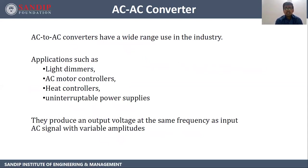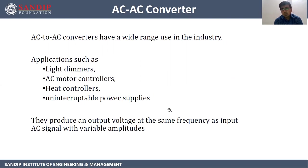Next topic is AC to AC converters. AC to AC converters have a wide range of use in industry. Applications of AC to AC converters are light dimmers, AC motor controllers, heat controllers, and uninterruptible power supplies. They produce an output voltage at the same frequency as the input AC signal but with variable amplitudes.